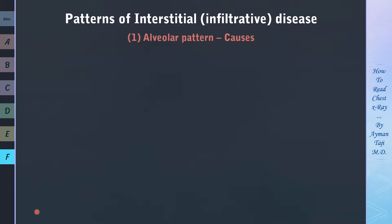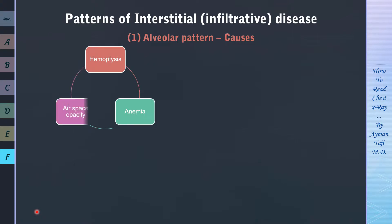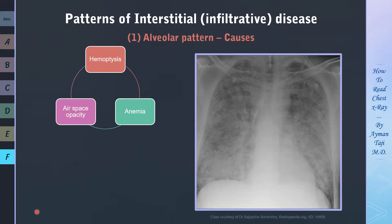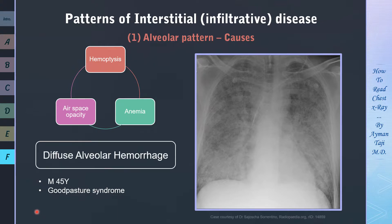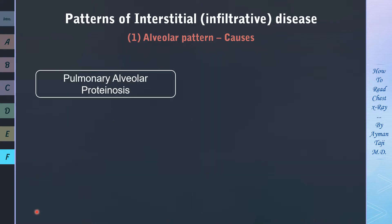Another thing which can fill the airspaces is blood, leading to airspace opacification. Pulmonary hemorrhage is a broad term describing any form of bleeding into the lung and can arise from a myriad of causes. In a traditional sense, it's described when the following constellation of features occur simultaneously — hemoptysis, anemia, and airspace opacities on imaging. In this case, a 45-year-old male with a diagnosis of Goodpasture syndrome shows diffuse bilateral airspace opacification due to alveolar hemorrhage on CXR.